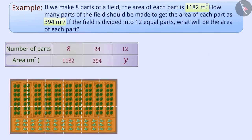Now, let us find out the area of individual parts if the field is divided into 12 equal parts. Suppose, in this case, the area of each part is variable y.